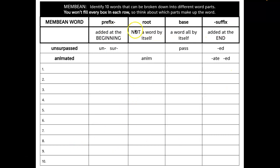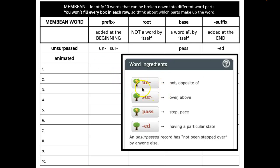So on the back, it says identify ten words that can be broken down into different word parts. You won't fill in every box in each row, so think about which parts make up the word. So again, you're going to go back to that study page, find some words that you think have multiple word parts, and click on them, and then take a look at the word ingredients.